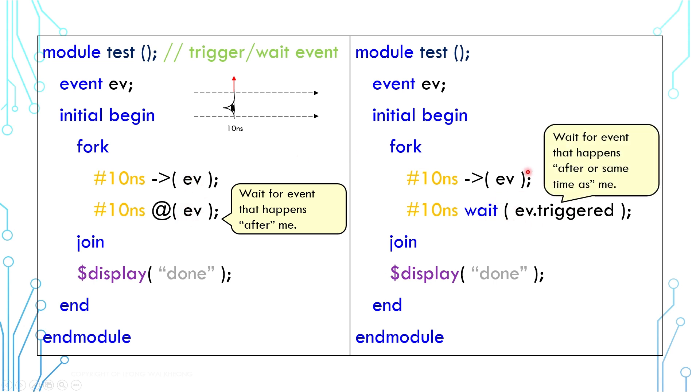On the other hand, for the wait statement, the precedence doesn't matter. As long as both happen at the same time, the blocking will always see the trigger.